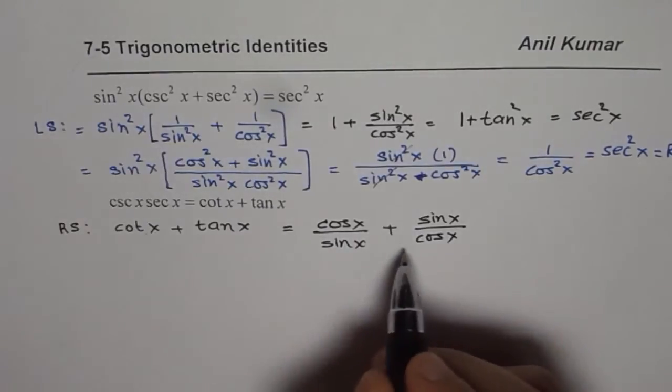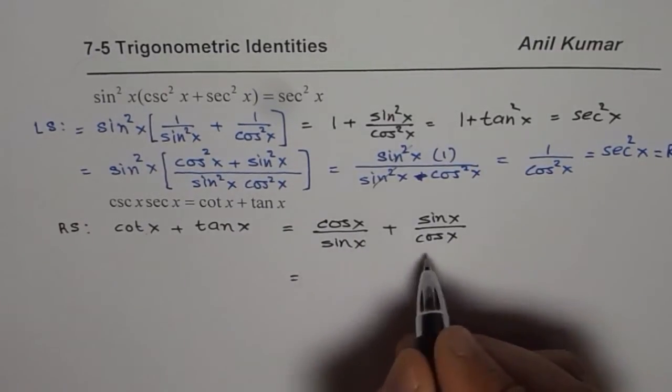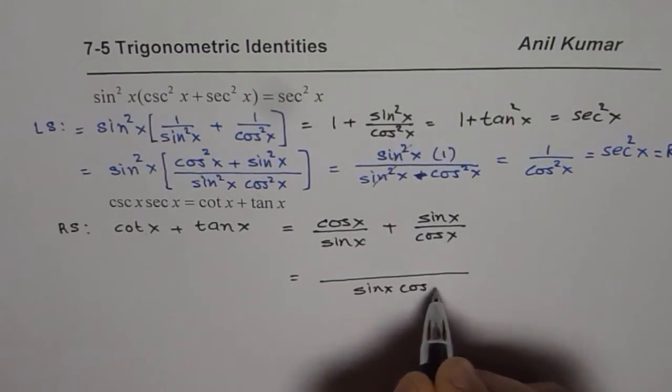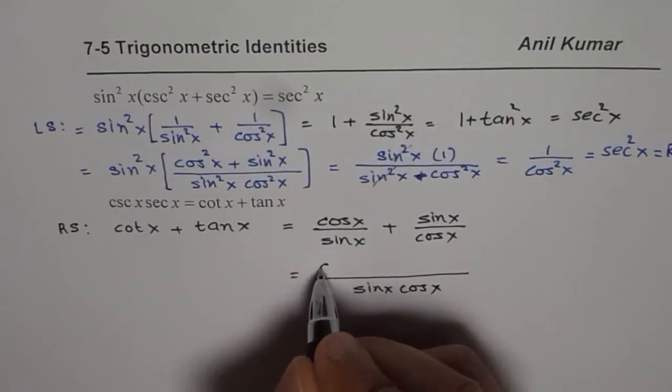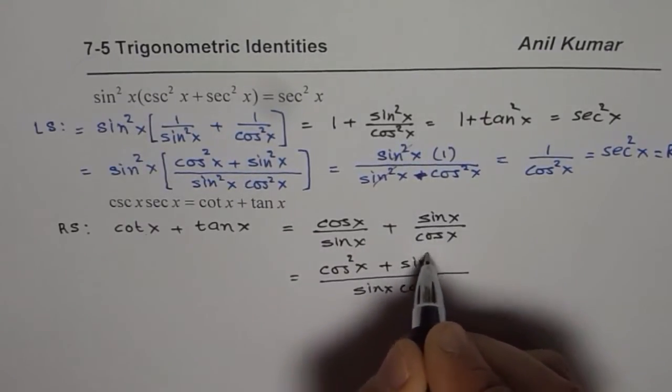Now we can take the common denominator and cross multiply. If we take the common denominator, we get sin x cos x, and when we cross multiply we get cos²x + sin²x.